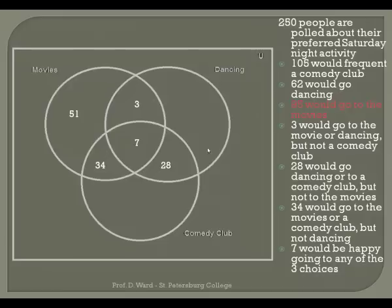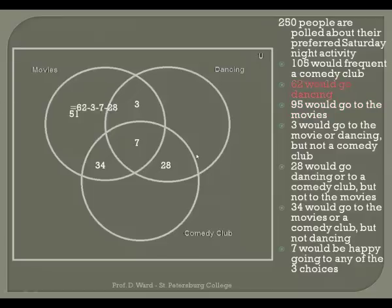Sixty-two would go dancing — again, that's very broad; 62 people are in this circle. I want to know how many wanted only dancing and would not choose the movies or comedy club. So I subtract the three who would go dancing or movies, the seven who would choose all three, and the twenty-eight who would choose dancing or comedy club. That gives twenty-four people who would choose dancing only.